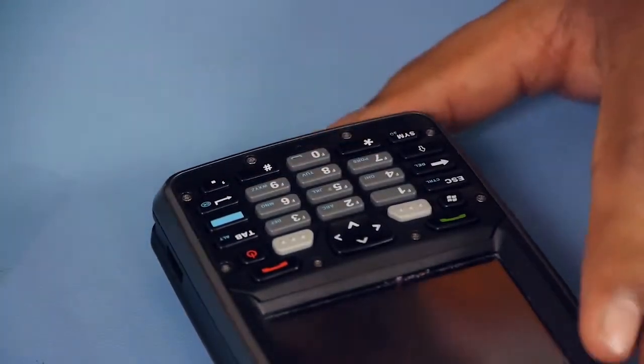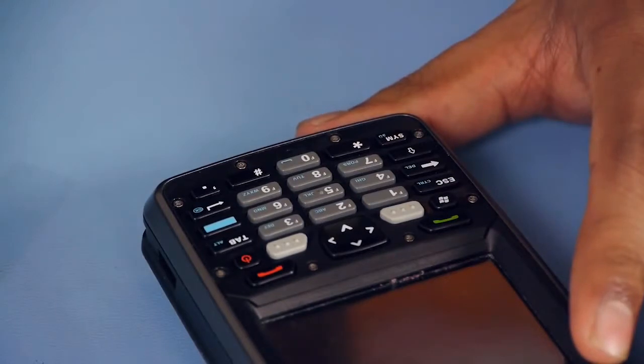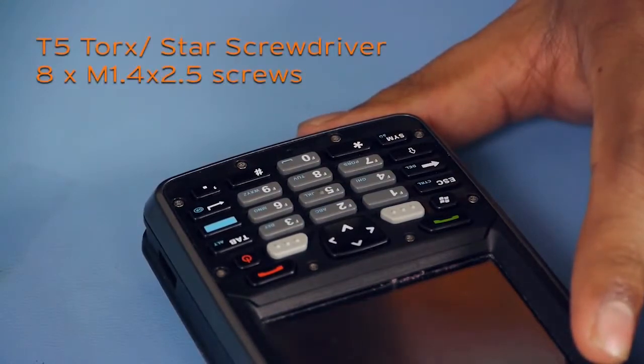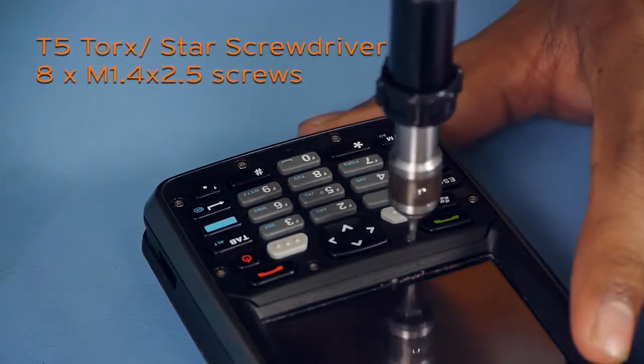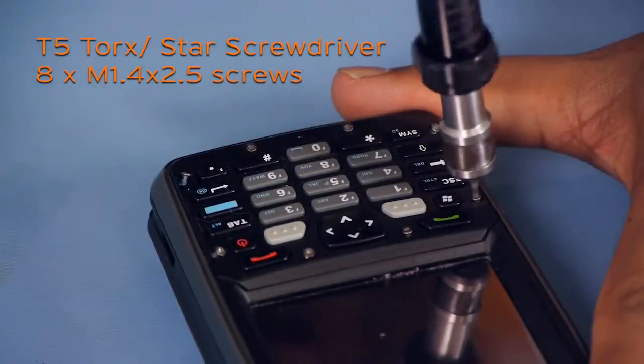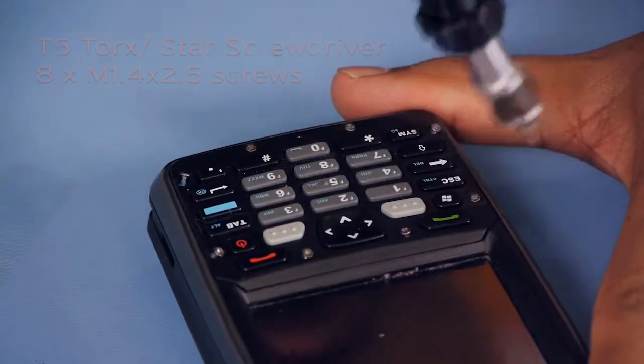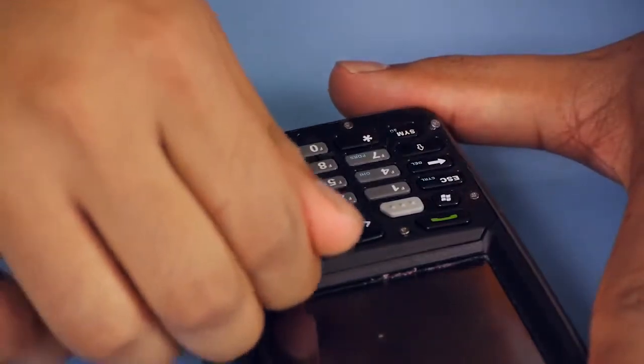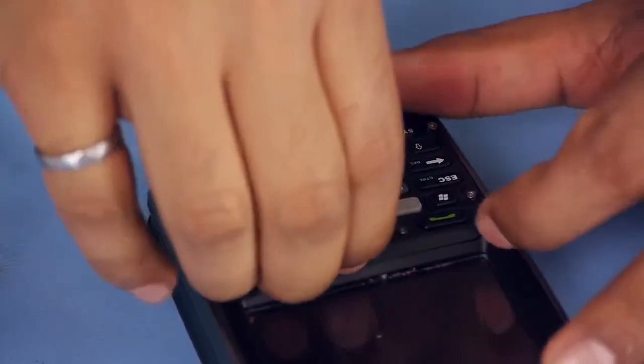The next step is to remove the eight screws from the bezel. And to do that, you need your T5 Torx screwdriver. Once you remove the last screw, all you need to do is remove the bezel from the housing, and the best place to grab it is at the top.